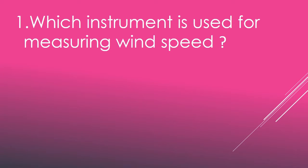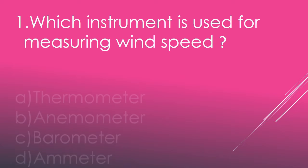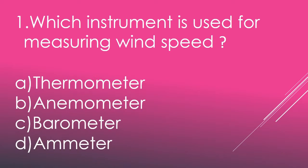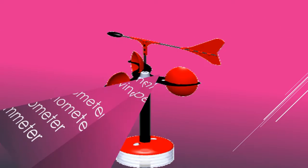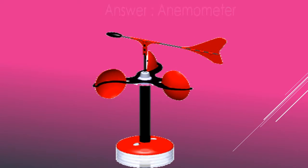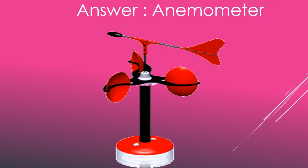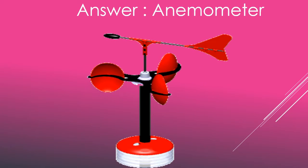Which instrument is used for measuring wind speed? Thermometer, Anemometer, Barometer, Amp-meter. The answer is Anemometer.